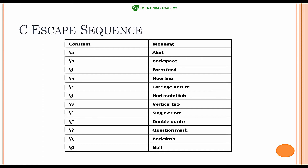These are the available escape sequences in C language. \a is useful for providing an alert when the program is executed. \b is useful for providing a backspace — clearing the last character. \f is useful for providing a form feed. \n is useful for moving the cursor to the new line vertically. \r is useful for moving the cursor horizontally to the beginning of the line, that is carriage return. \t is useful for adding four horizontal tab spaces.